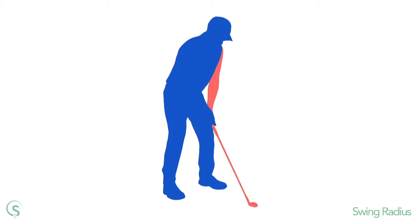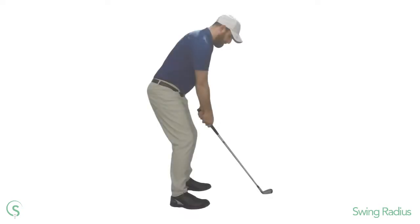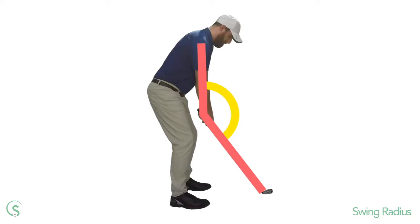The second factor that determines the swing radius is the angle between the left arm and the club. This can be altered by how you hold the club and also by cocking and uncocking the left wrist.